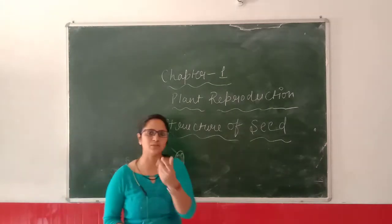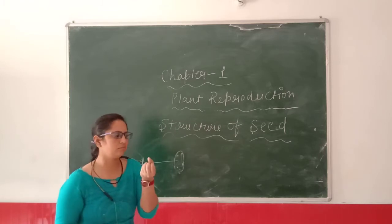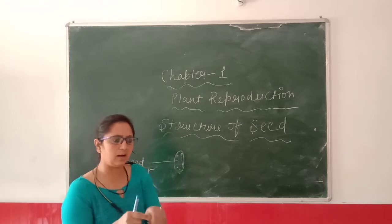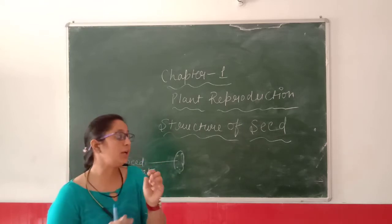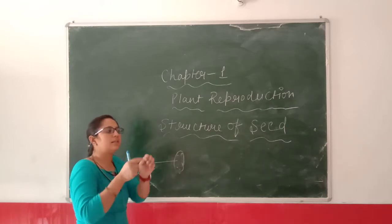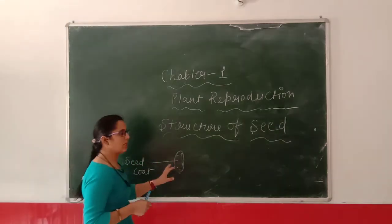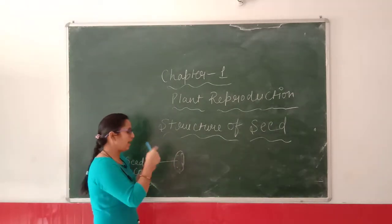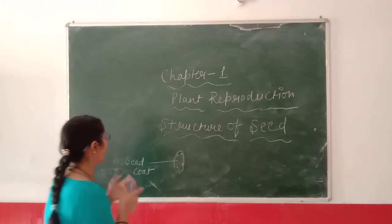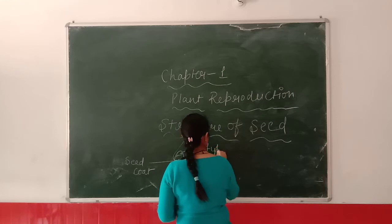Let me give you an example using the rajma bean. If you soak the rajma bean in water for 4 to 5 hours, the rajma beans will become soft and you can peel out the seed coat. Inside the seed cover there is a white-colored part — the seed cover itself is red or brownish in color. When you peel it out and see the white-colored part inside, that white-colored part is called the cotyledon.